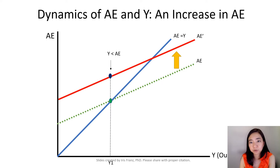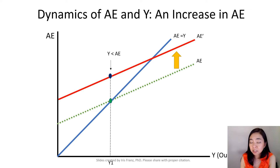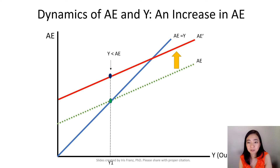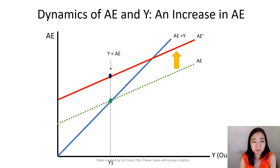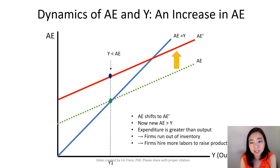Suppose there is an increase in the aggregate expenditure — say maybe the government spending has increased — then our aggregate expenditure schedule is going to shift up. So now we are at a new point, we are out of equilibrium. In particular, our aggregate expenditure is higher than our output, so firms are running out of inventory for sale.